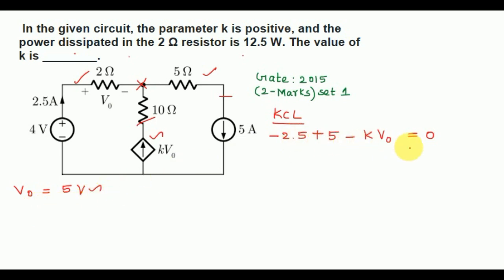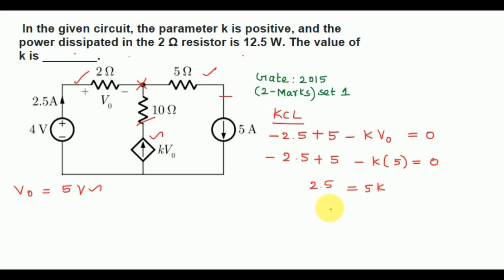We already know the value for V0. Substituting into the equation: minus 2.5 plus 5 minus k times 5 equals 0. So minus 2.5 plus 5 becomes 2.5, giving 2.5 = 5k. From this we get k = 2.5 / 5 = 0.5. So the answer for k is 0.5.